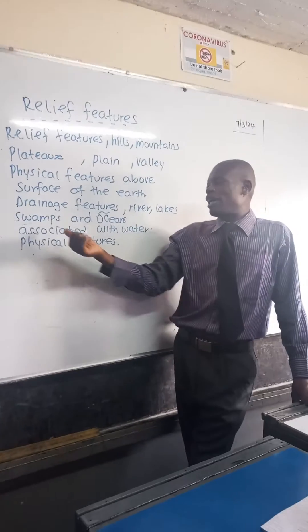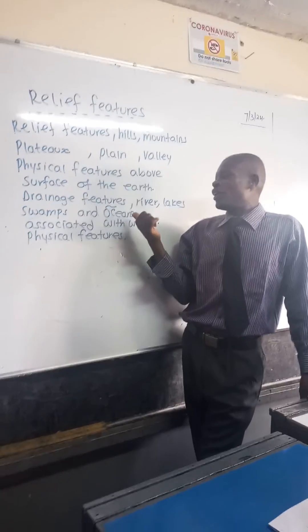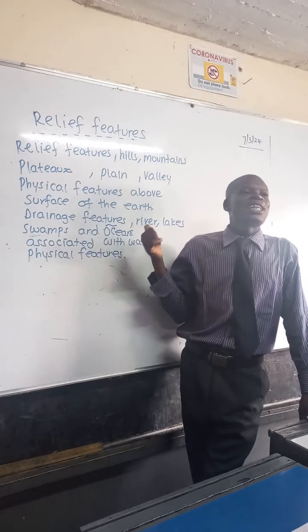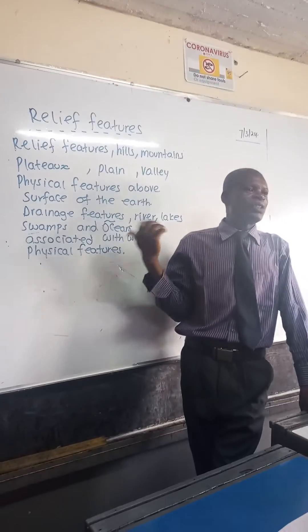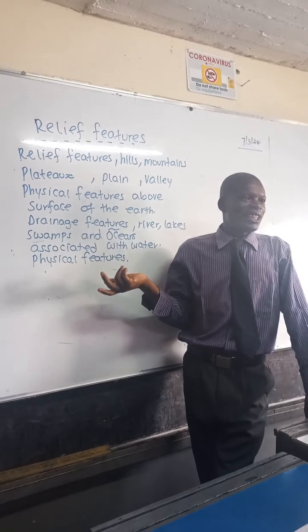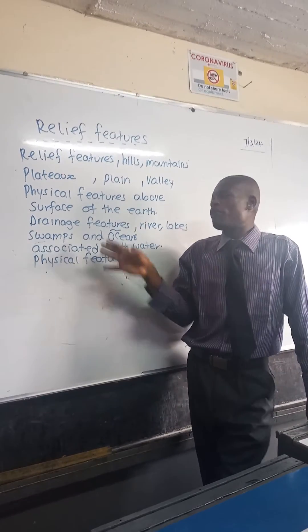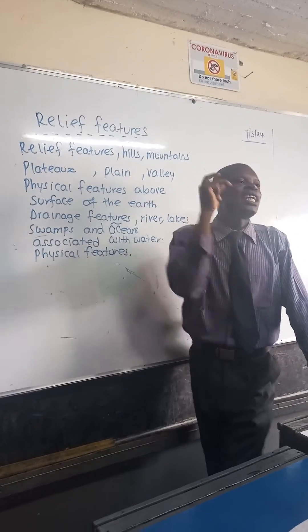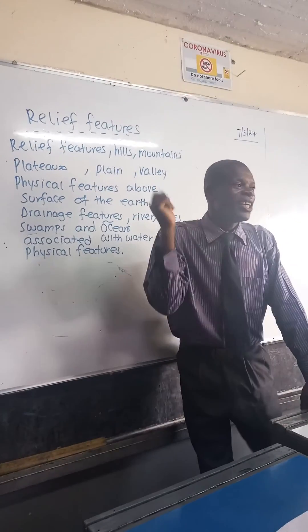And drainage features are associated with water. We have swamps, oceans, rivers, as well as lakes. They form part of what you call drainage features.